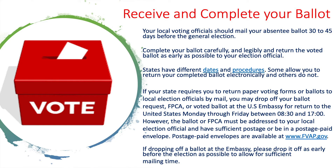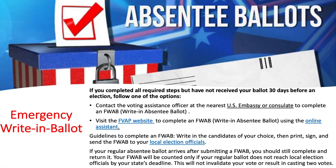Once you receive your absentee ballot, complete the ballot and return it based on the instructions provided with the ballot. If for some reason you have not received your ballot 30 days before the election, you do have options. You can contact your local embassy or consulate, or you can visit the FVAP website.